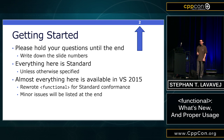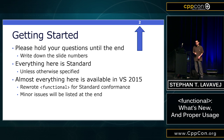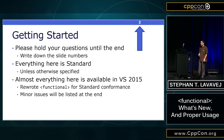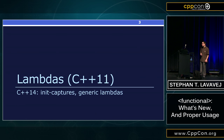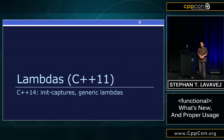Every feature I'm going to talk about is tagged with the standard revision, so if you only have access to C++11 or C++14 rather than everything coming in C++17, you'll know what will be available. Although this talk is about the standard library's functional header, I want to start by talking about lambdas, as this is a prerequisite for understanding everything I'll talk about later.